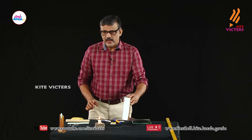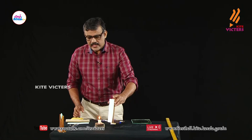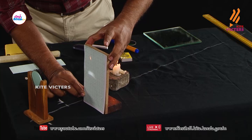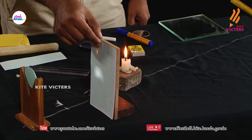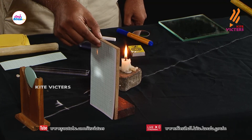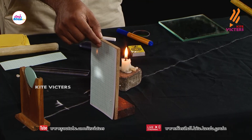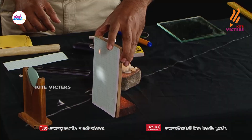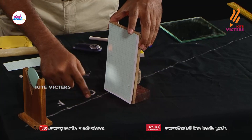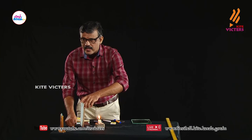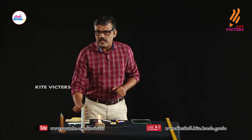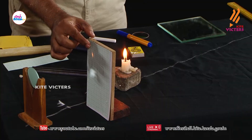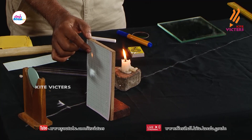By adjusting the screen, I get a clear image of the burning candle on the screen. The image is forming in between C and F — it is inverted, real, and smaller than the object, which is exactly what we expect when the object is placed beyond C.